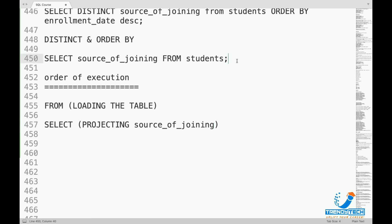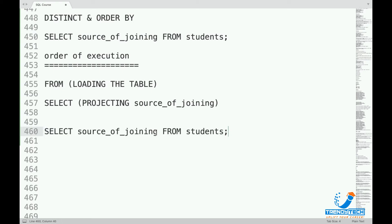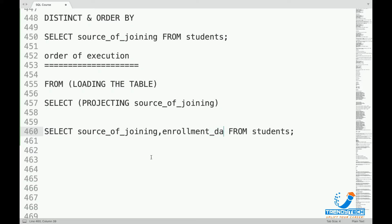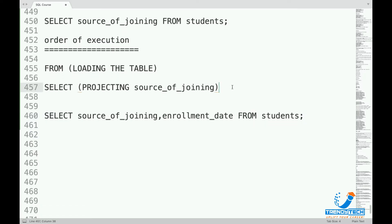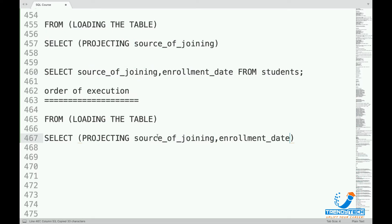Now what if I add something like SELECT source_of_joining, enrollment_date FROM students? Then the order of execution would be almost the same. First it will load the table — the students table — and then next it will do a projection on these two columns.